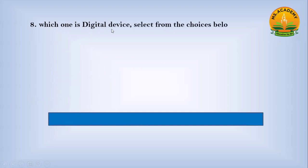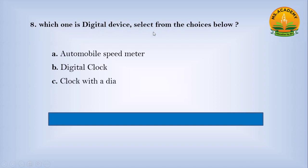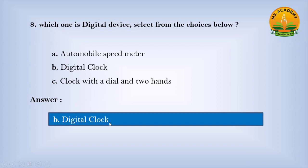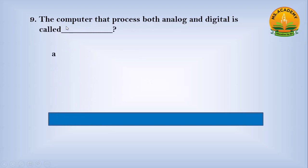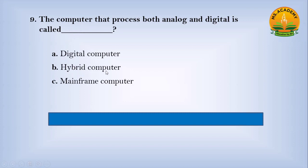Which one is a digital device? Select from the choices below. Option A Automobile speed meter, option B Digital clock, option C Clock with a dial and two hands. Answer: B. Number Digital clock. The computer that processes both analog and digital is called dash. Option A Digital computer, option B Hybrid computer, option C Mainframe computer. Answer: B. Number Hybrid computer.